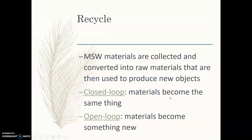Recycle! Municipal solid waste materials are collected and converted into raw materials that are then used to produce new objects. This could be closed loop or open loop. Closed loop means the material becomes the same thing — taking a plastic water bottle and making it into another plastic water bottle. Open loop means materials become something new — taking that plastic water bottle and making it into a fleece jacket. The problem, though, is that those plastic materials can end up in our water, which is no good.